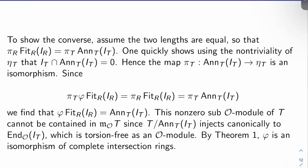We're going to move on to Criterion 2 next video, which is the J-structure criterion on isomorphisms of complete intersection rings. See you then, and thank you for watching.